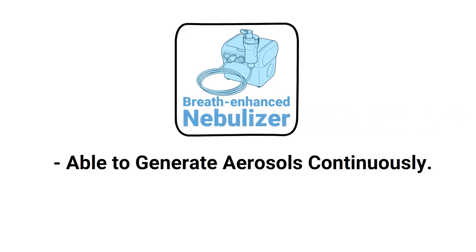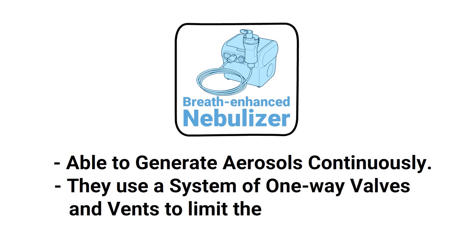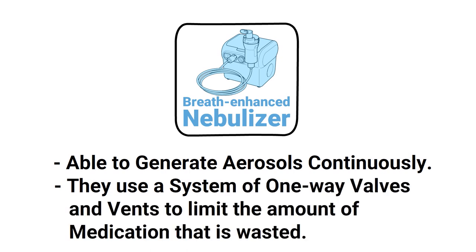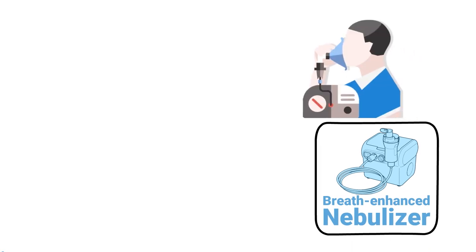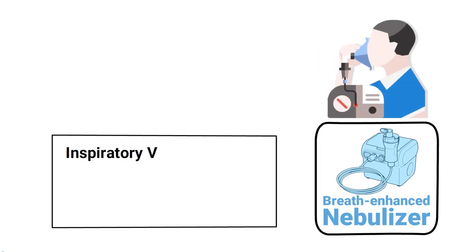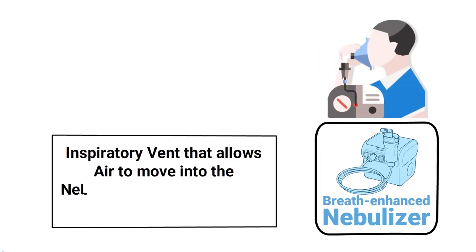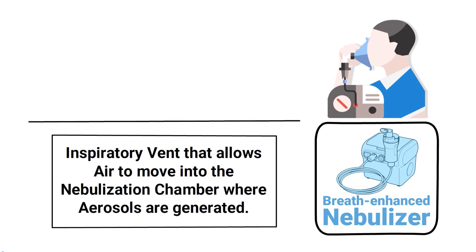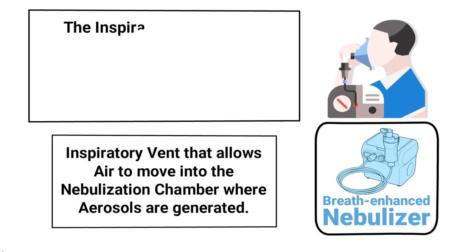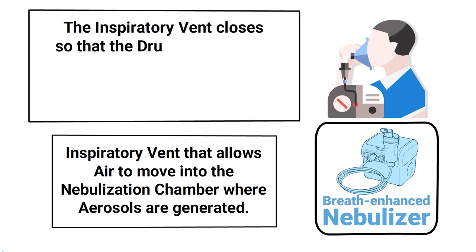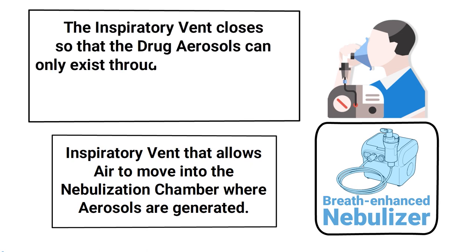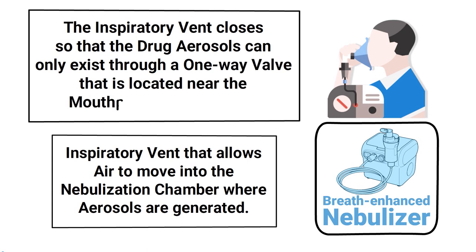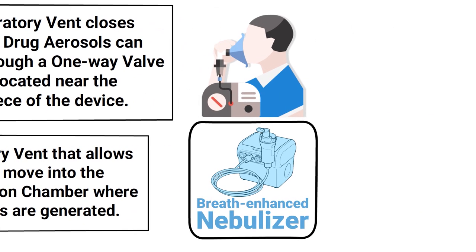Breath enhanced nebulizers generate aerosols continuously, and they use a system of one-way valves and vents to limit the amount of medication that is wasted. When a patient takes a breath in, there is an inspiratory vent that allows air to move into the nebulization chamber where aerosols are generated. Then as the patient exhales, the inspiratory vent closes so that the drug aerosols can only exit through a one-way valve located near the mouthpiece of the device.